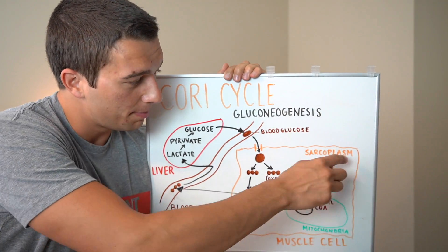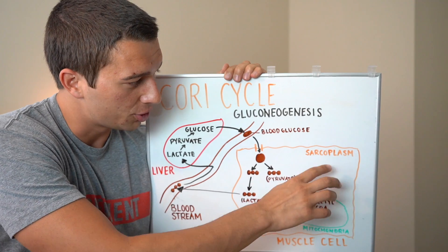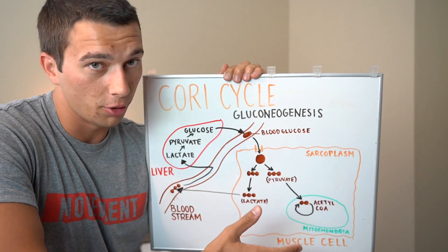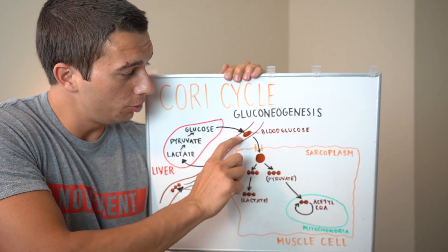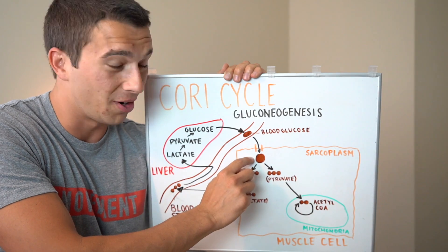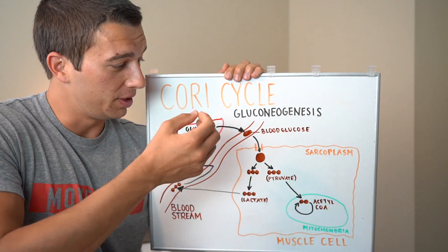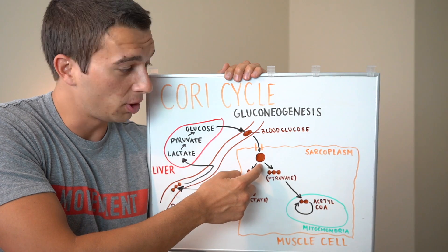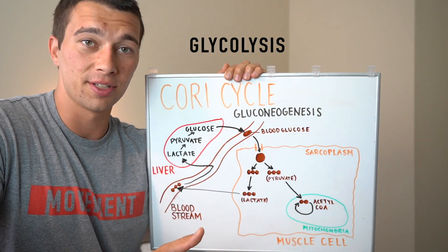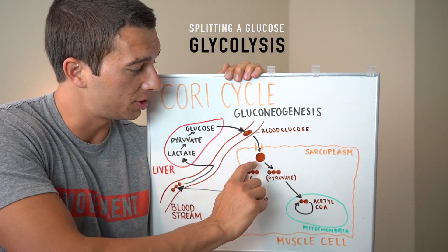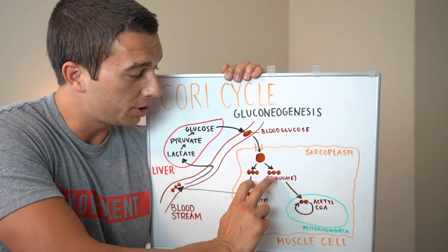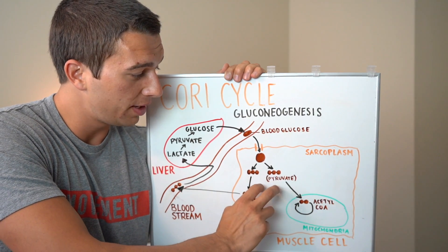This orange box is a muscle cell, and this area is labeled sarcoplasm because all this stuff — just the area that we're floating around in — would be considered the sarcoplasm. What you can see here is that glucose molecule; it's a six-carbon molecule, and it just went through a transporter and into the muscle cell. Now we can go through the process of glycolysis — splitting a glucose. It was a six-carbon molecule, and we split it in half, and now it's two pyruvate molecules, three carbons each.